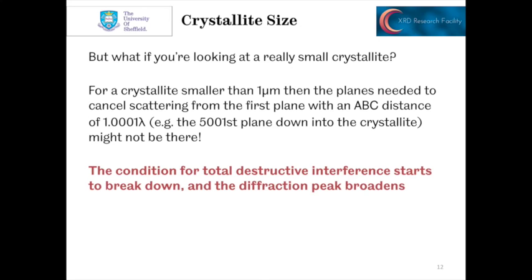What about if you're looking at a really small crystallite? If the crystallite size is smaller than certainly 1 micron, maybe 0.1 of a micron, the planes you need to cancel scattering from the first plane, for say a wavelength of 1.0001 wavelengths, that 5,000 and first plane down into the crystallite might not actually be there. And so the condition for the total destructive interference starts to break down. The diffraction peak begins to broaden.